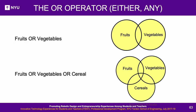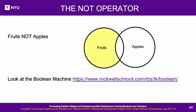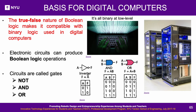The OR operator: many fields or datasets have characteristics that come under a common category. For example, fruits OR vegetables are both edible; fruits OR vegetables OR cereals are all edible. The NOT operator: sometimes there are no common characteristics between datasets, such as fruits that are NOT apples. The true-false nature of Boolean logic makes it compatible with binary logic used in digital computers. Electronic circuits that produce Boolean logic operations are called gates — NOT, AND, OR, etc. — and the circuit diagrams implementing them are called gate diagrams.